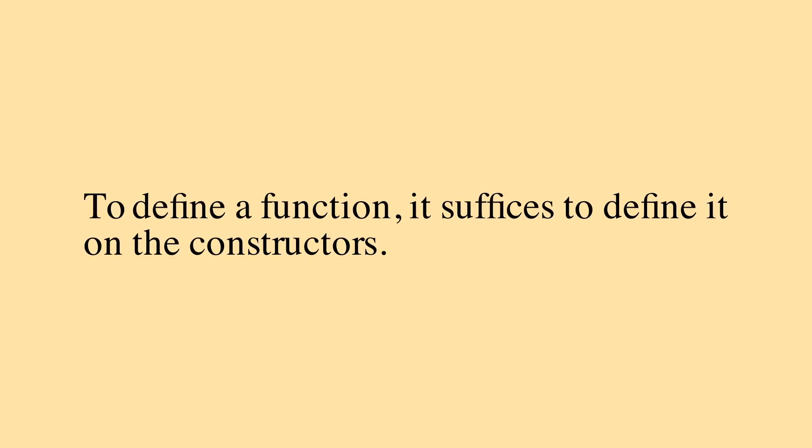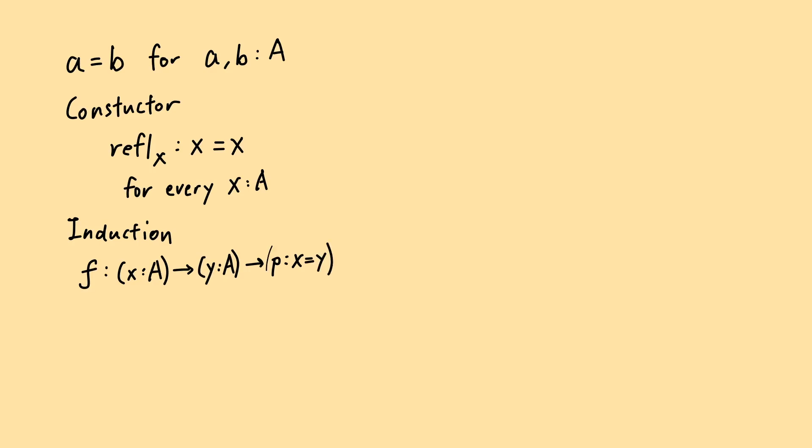In general, induction in type theory is the idea that to define a function, it suffices to define it on the constructors. Let's apply this idea to the identity type. The identity type is formed by writing an equal sign between two elements of the same type. It has a constructor, reflₓ, of type x equals x for every x. The induction rule says that to define a function that takes x, y and an element p of type x equals y, it suffices to define it on x, x and reflₓ for an arbitrary x.